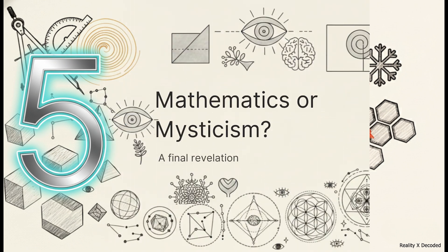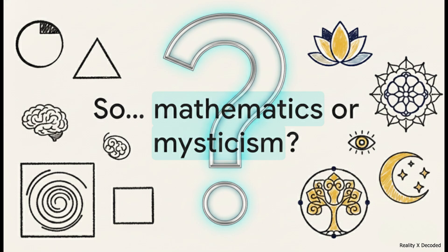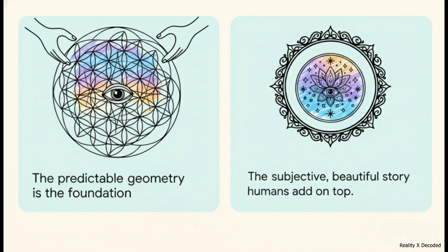So this brings us full circle, right back to our original question and to our final revelation. We've seen the math. We've seen the human need for meaning. So what's the final answer here? After looking at all of this, where do we land? Is it one or the other? Is it just cold, hard mathematical fact? Or is it this deep spiritual symbol? The answer is, it's both. And understanding that is everything.